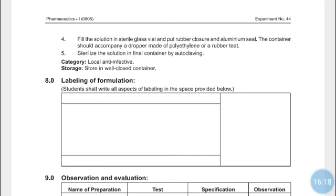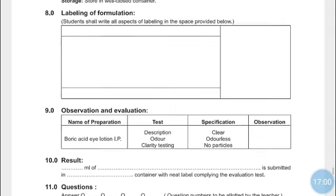The category of this formulation is local anti-infective — when instilled into the eyes, it acts locally against infection. Storage: store in a well-closed container. For labeling, write the name of the formulation along with its volume, composition with percent content, category, and all warnings and labeling instructions for ophthalmic preparations.